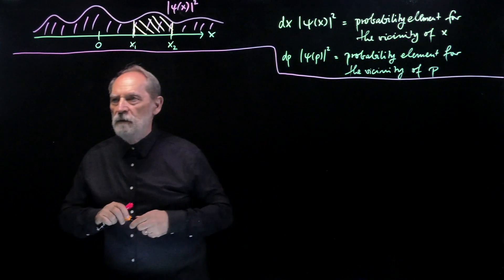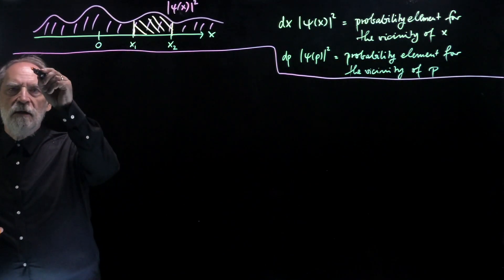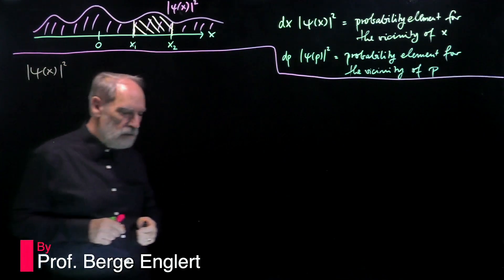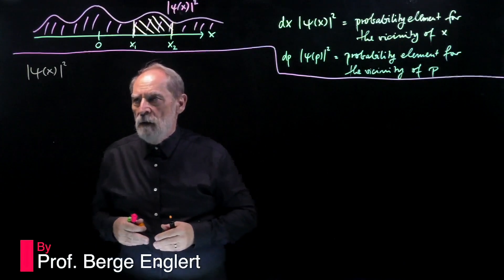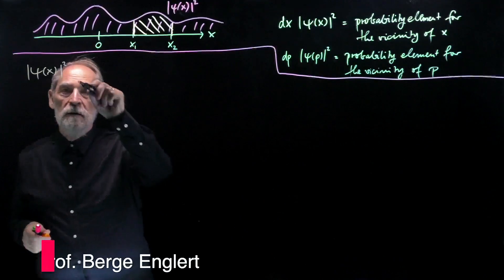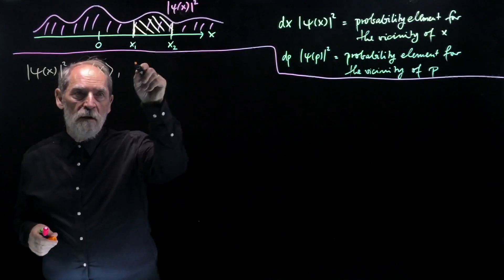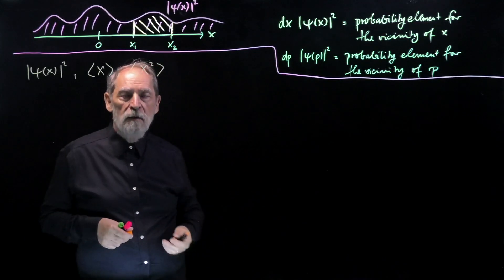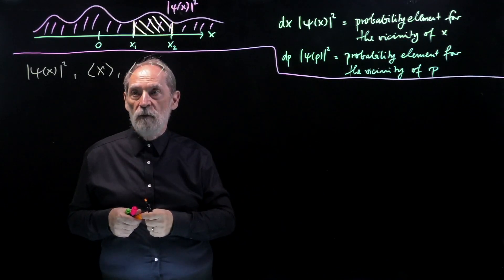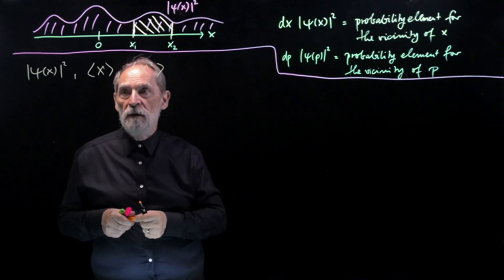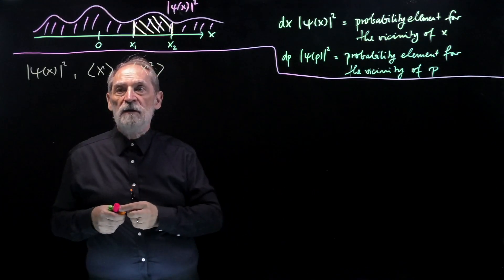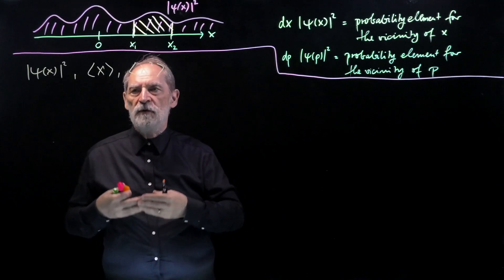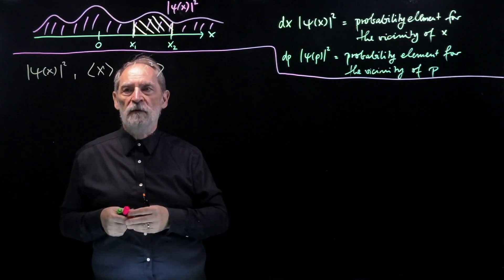So let's think about having a distribution in x. We have a wave function and we square that. Then we can calculate the expectation value of x, the expectation value of x squared, and higher powers of x if we like — and the same for momentum and momentum squared. But how does this convert into a measure of precision, or a measure of uncertainty about the value of x?